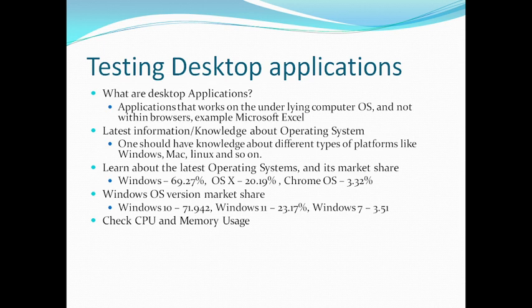The same applies to desktop applications. If you've used the application for one hour and the system was running smoothly before that but gets slow after one hour, you need to check the CPU and memory and monitor it throughout while using the application. If any event causes an unnecessary spike in CPU or memory, report it back to the developers. Always check CPU and memory usage while testing desktop applications.